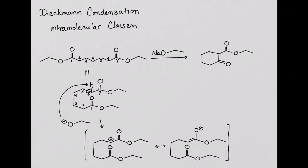Next, the enolate attacks the other ester as an electrophile, forming the tetrahedral intermediate.